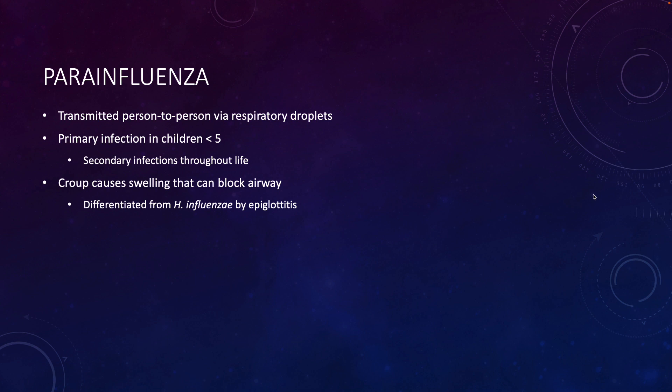Another infection that can cause that type of swelling blocking the airway is Haemophilus influenzae. But we can tell the difference between parainfluenza and Haemophilus influenzae because the blockage from Haemophilus influenzae is caused by swelling in the epiglottis. We don't see that with parainfluenza. So if a patient has that croup-type swelling and inflammation in the very upper parts of the respiratory tract, you can usually differentiate parainfluenza from Haemophilus because of the lack of swelling in the epiglottis.